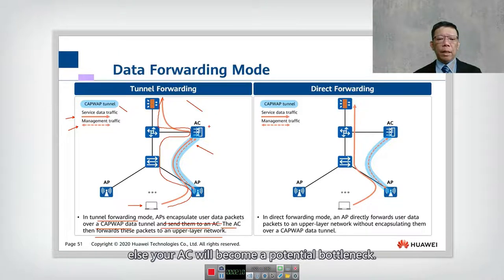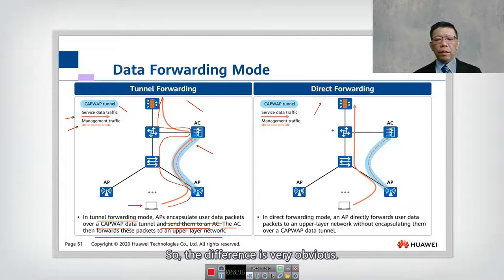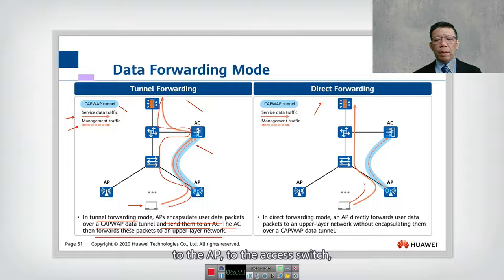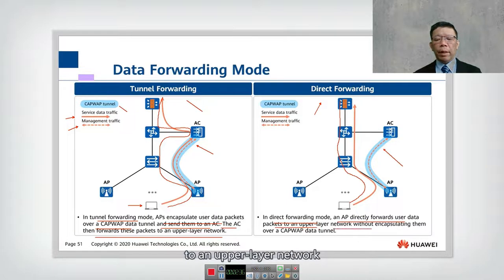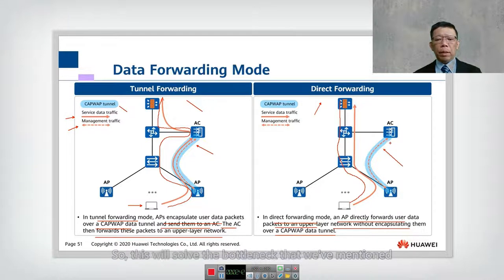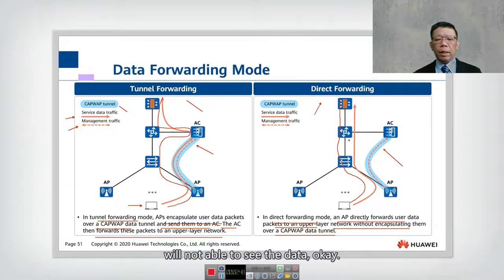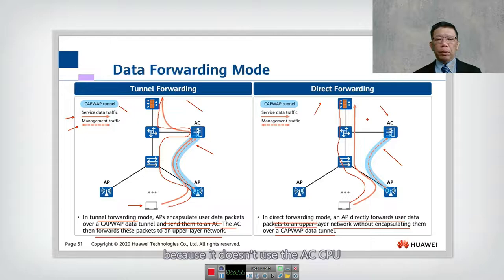The second mode is direct forwarding. The difference is obvious: the data traffic goes from the station to the AP, to the access switch, to the distribution switch, and directly out to the internet. Only the management traffic goes through the CAPWAP tunnel. In direct forwarding mode, the AP directly forwards data packets to the upper layer network without encapsulating them over a CAPWAP data tunnel. This solves the bottleneck issue since the CAPWAP tunnel only controls the AP. The disadvantage is the AC cannot see the data, but direct forwarding is more efficient as it doesn't use the AC's CPU or bandwidth.